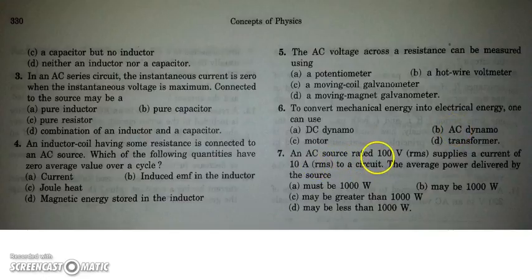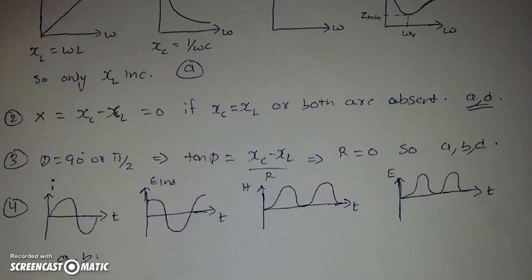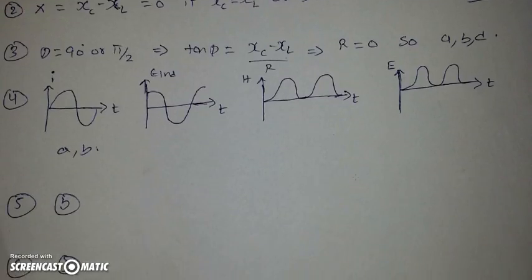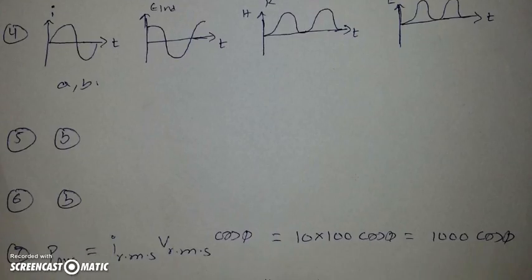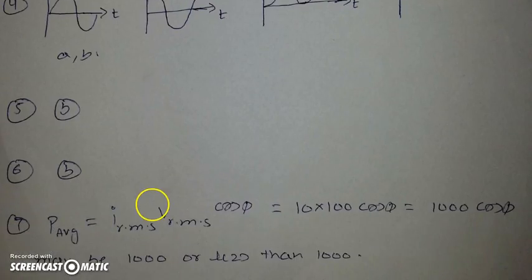Next question, there is an AC source rated 100 volt, which is RMS, and supplies a current 10 ampere, which is again RMS. The average power delivered by it will be, we can say, as the source is an AC and the power of AC is given by, this average power of an AC is given by VRMS, IRMS, into cos phi.